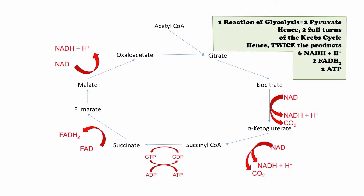That sums up all of the energy production of the Krebs cycle. Remember that this cycle happens twice for every glucose molecule or glycogen molecule, because two pyruvate were created and were converted into two acetyl-CoA molecules. Therefore, the total products of one glucose molecule from the Krebs cycle is 6 NADH and H+, 2 FADH2, and 2 ATP. This is what you need to know for the class. You will also need to know where on this diagram each reaction occurs and be able to point them out.